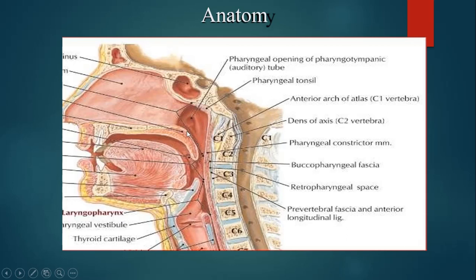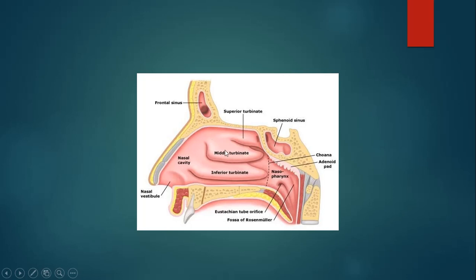This hole is the nasopharynx, this is the soft palate, this is the oropharynx and below is the hypopharynx. You can also see in this picture, this is the opening of the Eustachian tube and behind it, this is a recess which is called fossa of Rosenmuller or lateral pharyngeal recess.